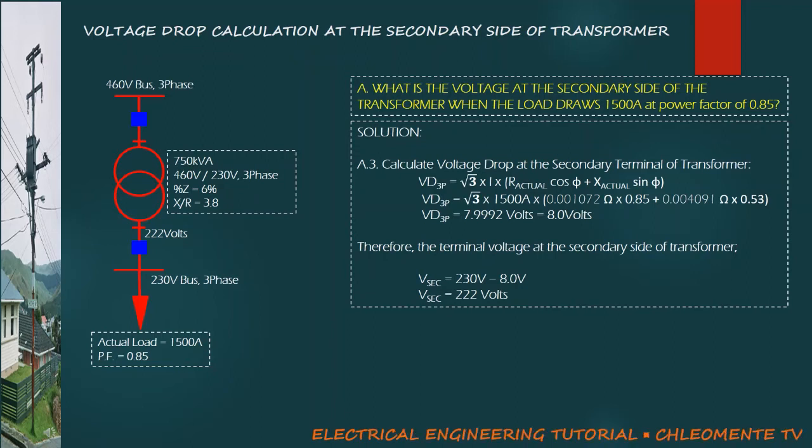Therefore, the terminal voltage at the secondary side of transformer is 230 volts, which is the rated voltage of the transformer, minus the voltage drop of 8 volts, yields to 222 volts.